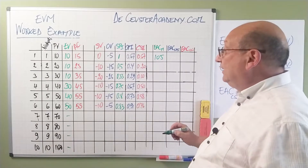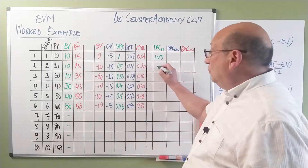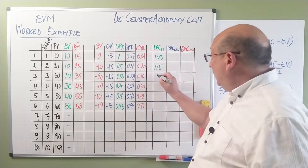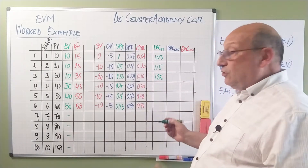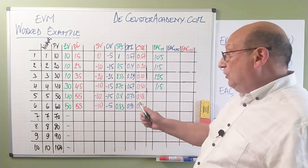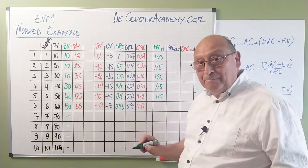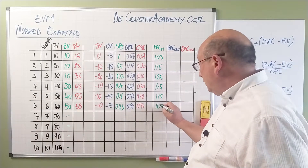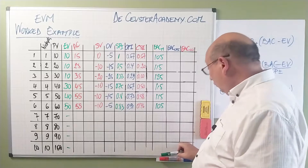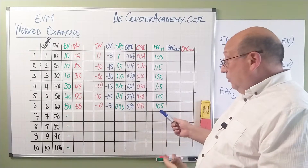Applying the same formula for all periods: actual cost 25 plus remaining 90 gives 115. Then 35 plus 90 is 125. Continuing, we have 115 again, then 55 plus the remaining 60 is also 115. And the last one gives us an estimate of 105. So our optimistic estimate is rather good — there are not so many differences; we went up a little bit and then improved again.